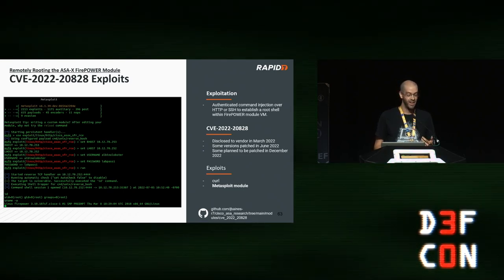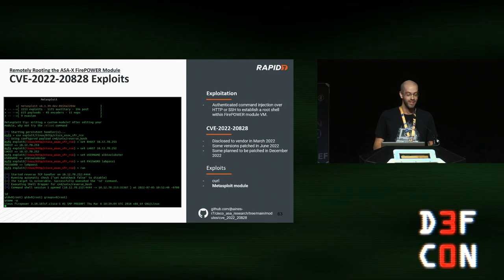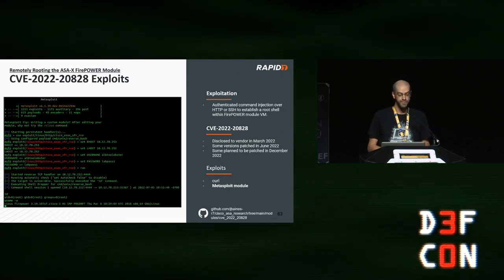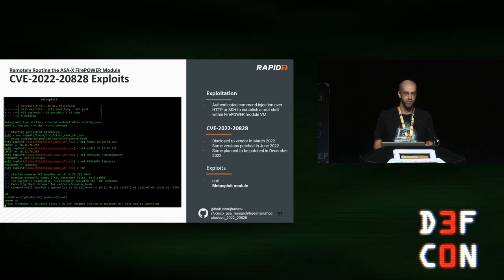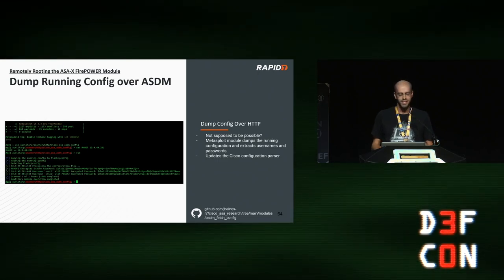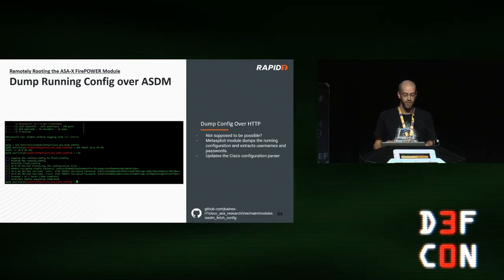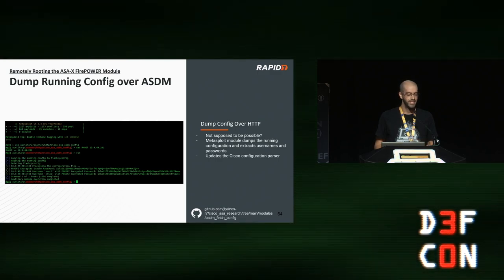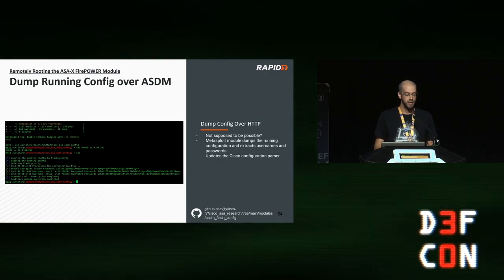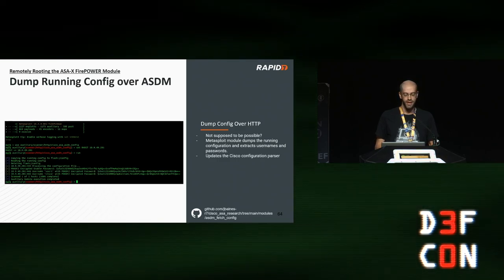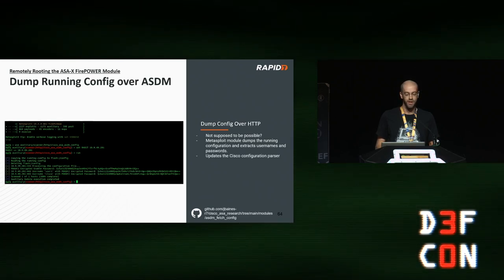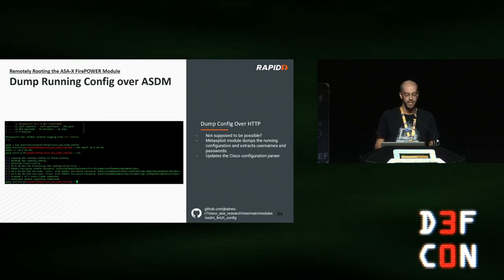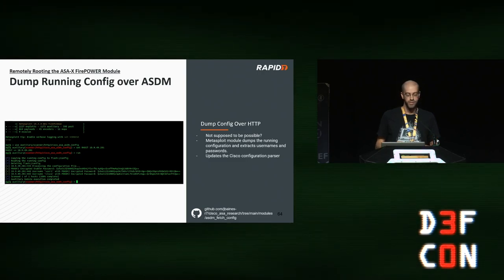With credentials in hand, I also wrote a Metasploit module for the command injection issue over HTTP. You provide IPs and credentials, throw the exploit, and catch a reverse shell. Semi-related: I was messing around with the ASDM interface and figured out how to dump the running configuration over HTTP — which I don't think ASDM is supposed to be able to do. It involved some Cisco CLI hackery, but if you come across ASDM credentials, this is another way to dump more credentials.